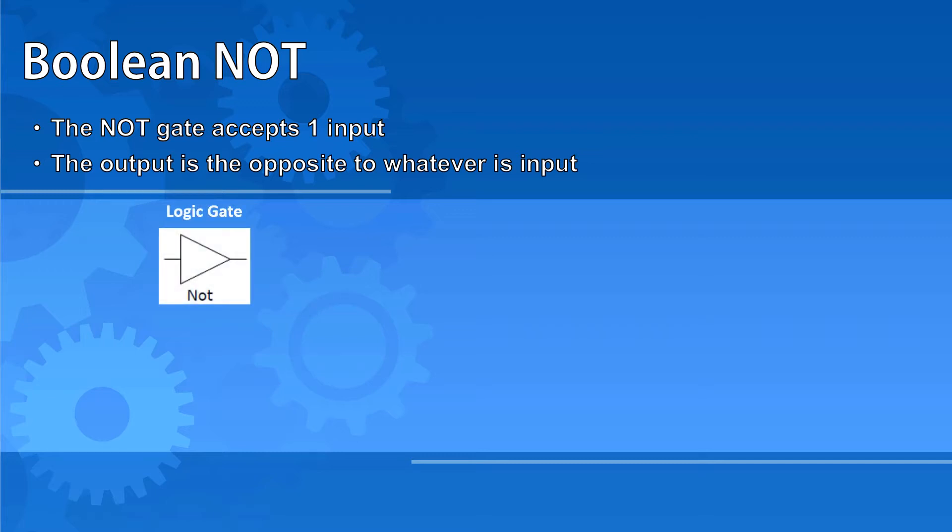Let's start by having a look at the Boolean NOT. The NOT gate accepts one input. The output is the opposite of whatever the input was. The NOT logic gate is a triangle pointing in the direction the data is traveling. It's sometimes shown with a circle at the tip of the point.